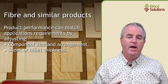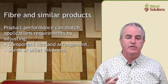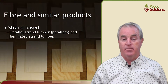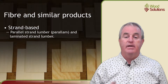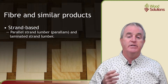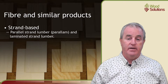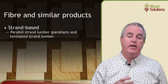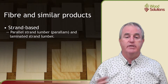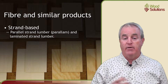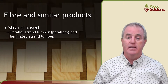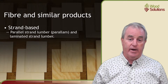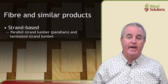There are four main groupings of small wood components used to make this type of panel product. The first is strand. These are like narrow pieces of veneer and are used as the base resource for parallel strand lumber or PSL and laminated strand lumber or LSL.